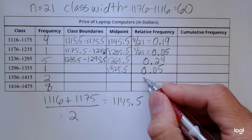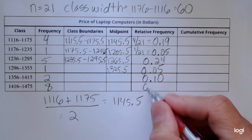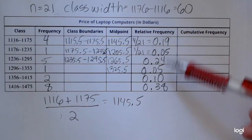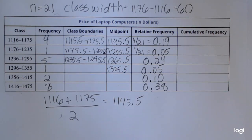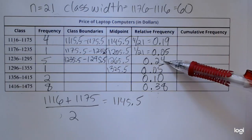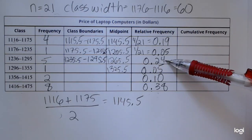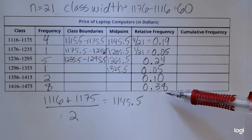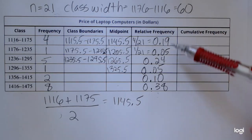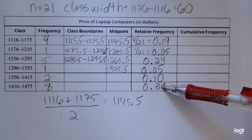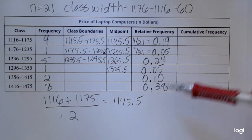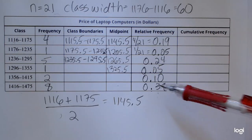I like the relative frequency column because it tells you in percent, if I multiplied all of these by 100, what percent of the values fall in each class. I can easily see that this class here, the third class, has 24 percent of the values. The largest class is this last class with 38 percent of the values. If I added all of these frequencies, it should add to one or 100 percent.